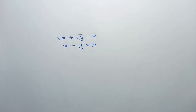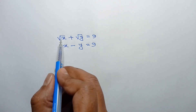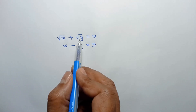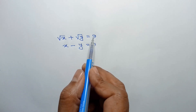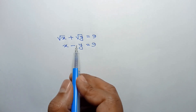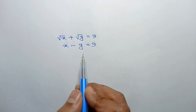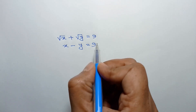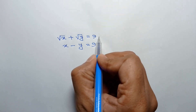Hi everyone. In this video I am going to show how to solve this system of equations: square root of x plus square root of y is equal to 9, and x minus y is equal to 9.